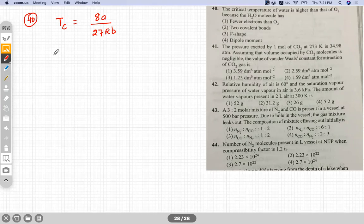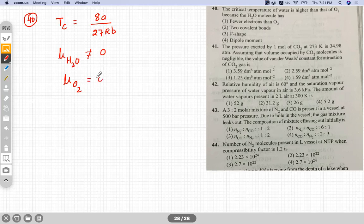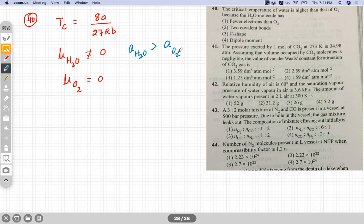So H2O molecule, we know the dipole moment of H2O. H2O is a polar molecule. Dipole moment is not equal to zero. But for O2, the dipole moment is zero. It is non-polar. So the value of A, we know the value of A for H2O molecule is greater than to that of O2.